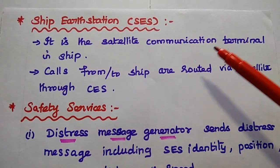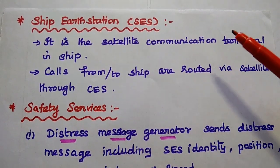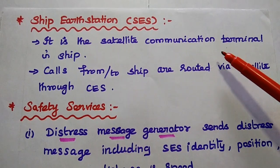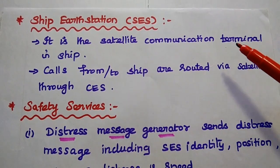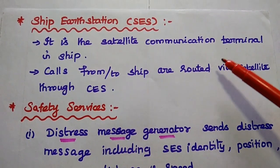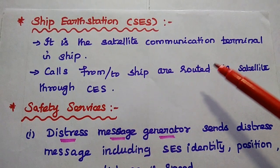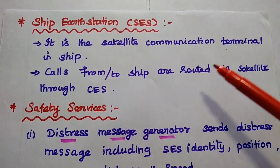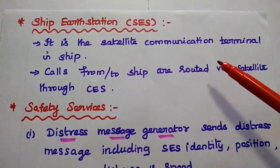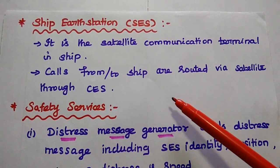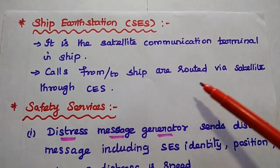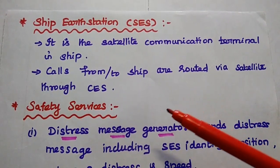The Ship Earth Station, or SES, is the satellite communication terminal on the ship. It can be a satellite phone, data terminal, or telex available on the ship. Calls from the ship or to the ship are routed via satellite through the CES.